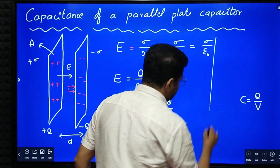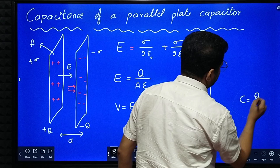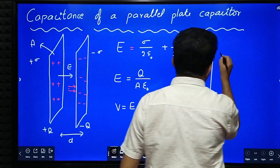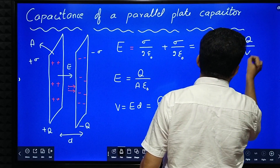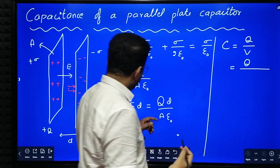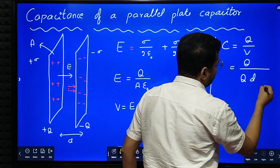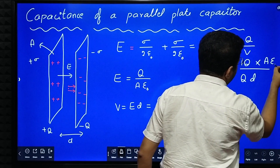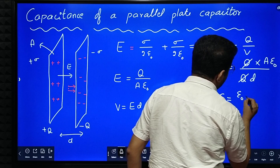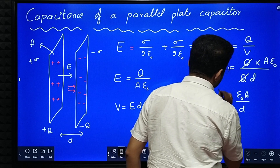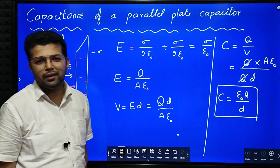Now we calculate the capacitance. Capacitance is equal to Q by V. That is equal to Q divided by Q d over A epsilon naught, which gives Q multiplied by A epsilon naught over Q d. Q gets cancelled, so the capacitance of a parallel plate capacitor is equal to epsilon naught A by d. Hope you understood this. Thank you very much.